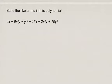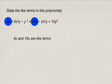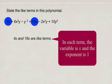If you're asked to state the like terms of this polynomial, if we look at the first term, 4x — well, 4x and 16x are like terms because in each term the variable is x and the exponent is 1.